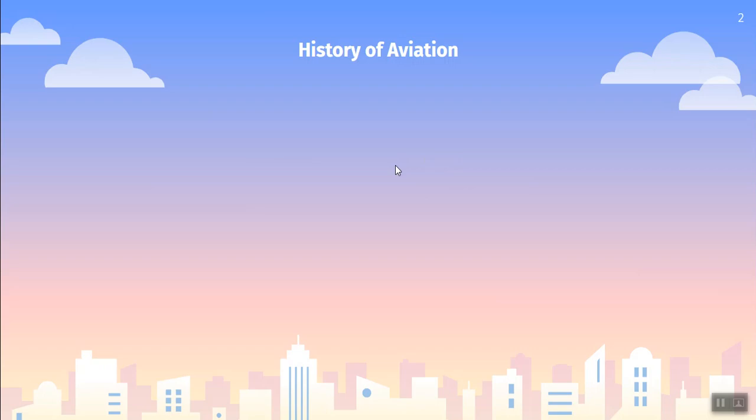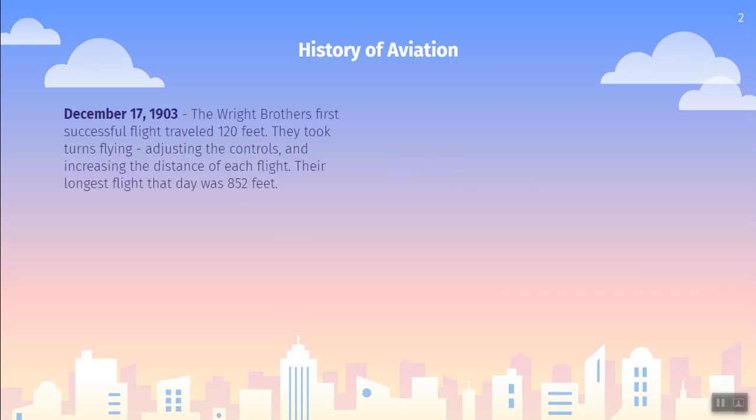If you said or thought anything about the Wright brothers, you were correct — you were, in fact, right. Back in 1903, the Wright brothers were the first to successfully fly a plane. They took their first successful flight all of 120 feet. Throughout that entire day of December 17th, they took turns and spent so much time practicing their flying, and each time they got a little bit better and a little bit farther. Their longest flight at the end of that day was a whopping 852 feet.